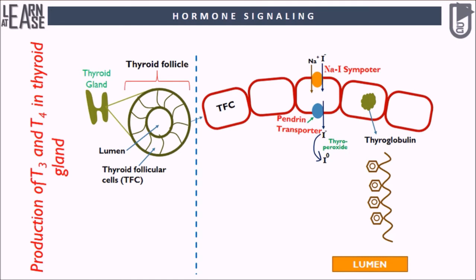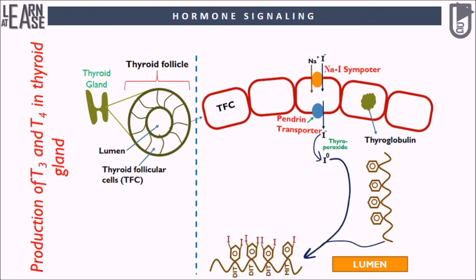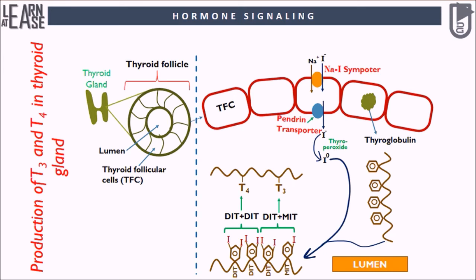The next process is also catalyzed by thyroperoxidase, where tyrosine residues in thyroglobulin are iodinated on their phenol rings at one or both of the positions ortho to the phenolic hydroxyl group, yielding peptidic monoiodotyrosine (MIT) and diiodotyrosine (DIT) respectively. The next process is known as coupling, where two peptidic DIT molecules couple to yield peptidic T4, the peptide-bound precursor of thyroxine, and coupling one molecule of MIT and DIT yields peptidic T3, the comparable precursor of triiodothyronine.